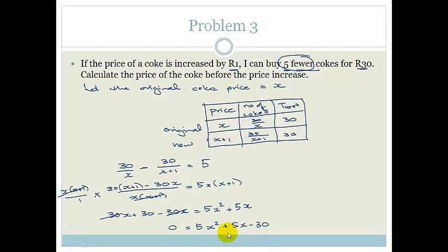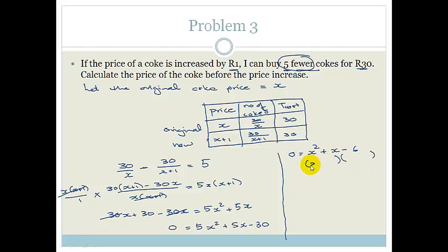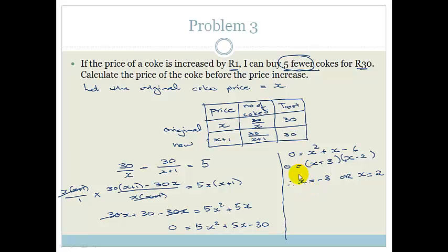So we have 0 equals 5X squared plus 5X minus 30. There's a common factor of 5, so dividing through by 5 gives 0 equals X squared plus X minus 6. Factoring: (X plus 3)(X minus 2) equals 0. Therefore X equals minus 3 or X equals 2. Before we'd leave it there, but a negative price is invalid — you cannot have a price of minus 3 Rand. So that answer is invalid. Always check for this when doing word problems.